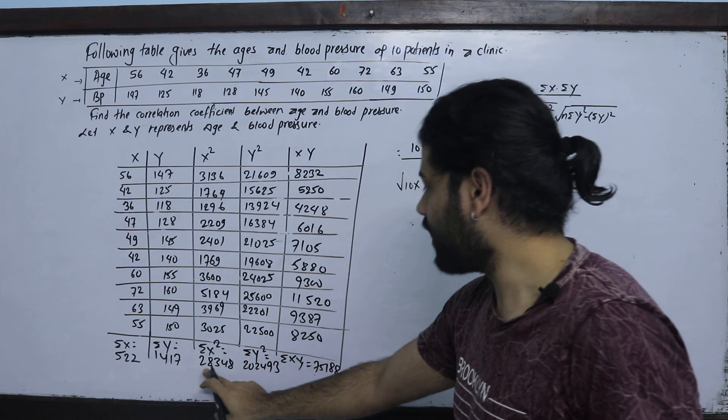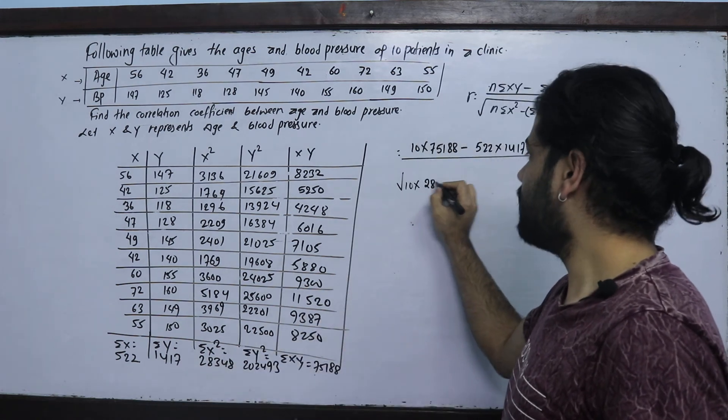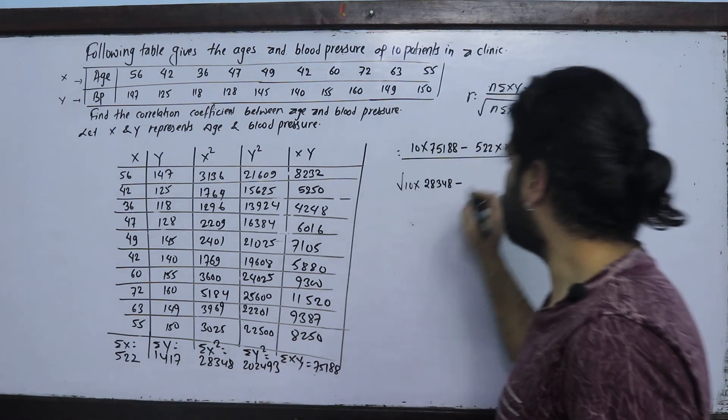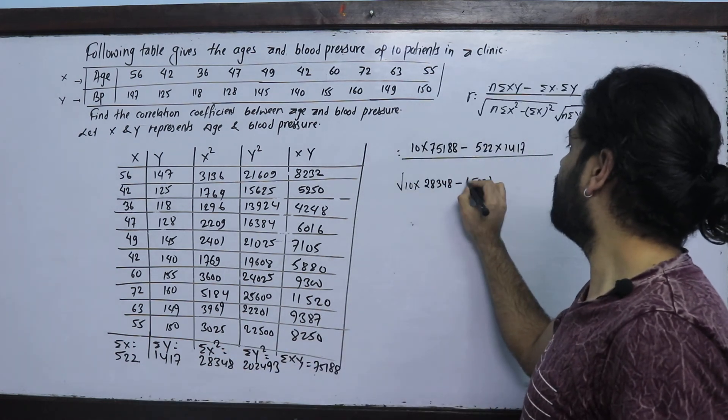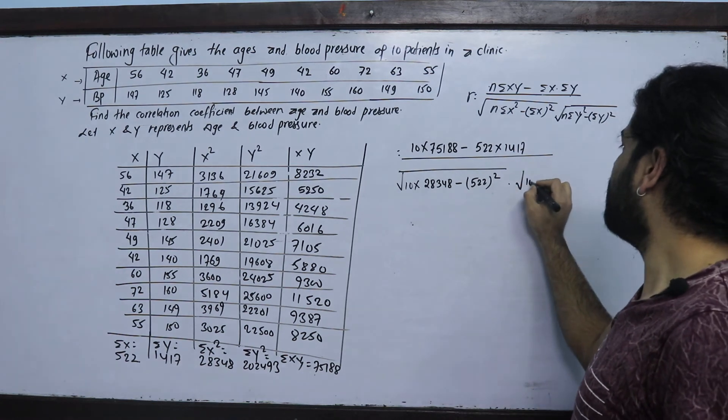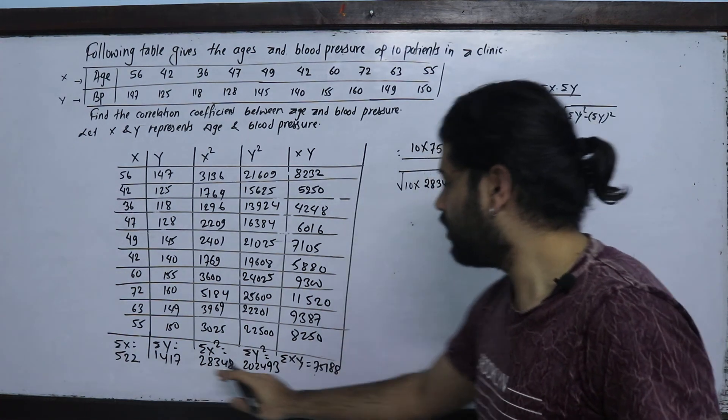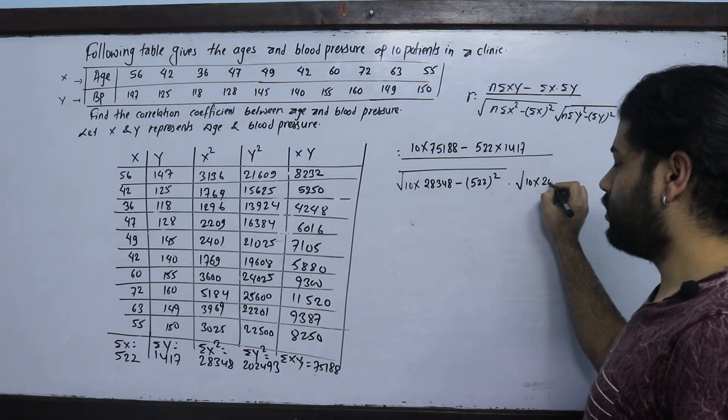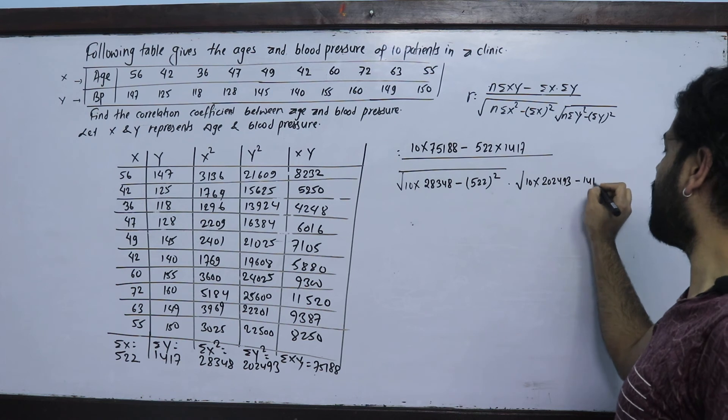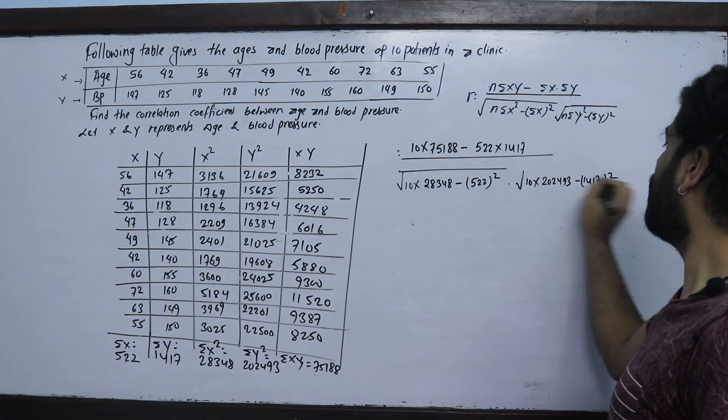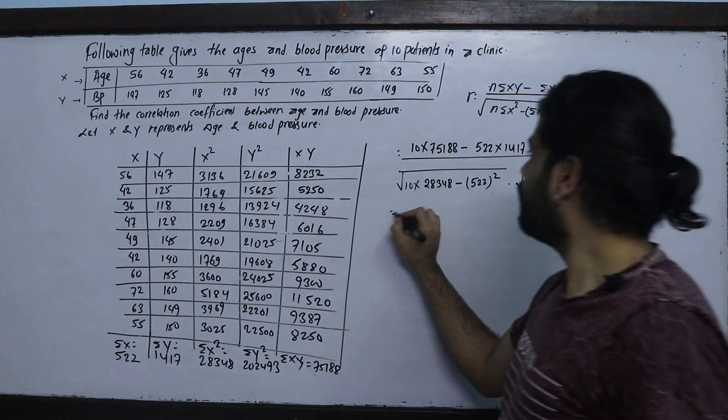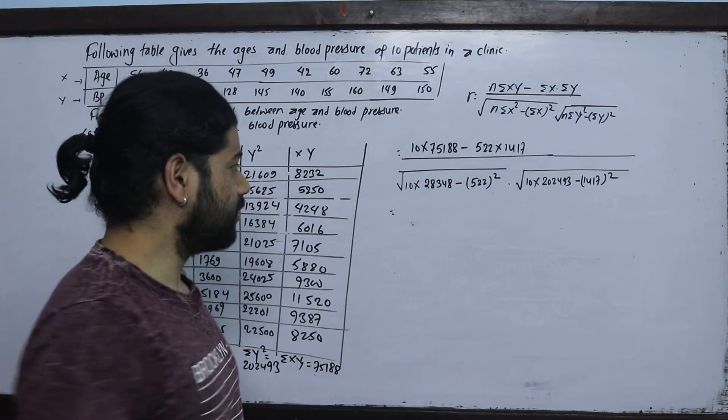Now n equals 10. So r equals 10 into 75188 minus 522 into 1417, divided by square root of 10 into 28348 minus 522 square, into 10 into 202493 minus 1417 square.